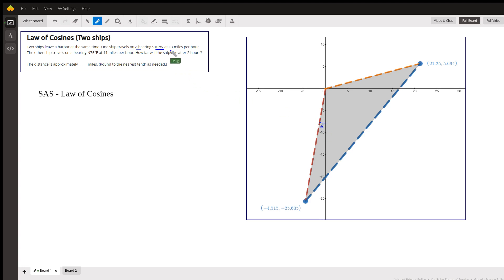If it travels at 13 miles an hour for two hours, after two hours the distance that it will have traveled is 26 miles. By the same token, the ship starting north 75 degrees east, starting here heading north 75 degrees east, that makes this a 75 degree angle, which means this little angle right here is 15 degrees.